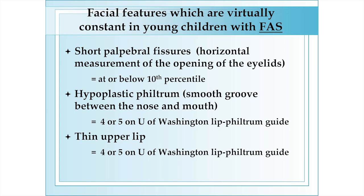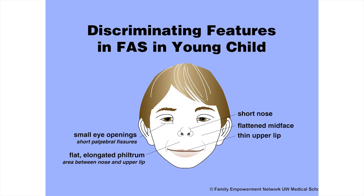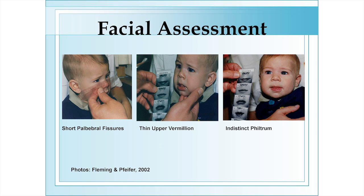The cardinal facial features of fetal alcohol syndrome include short palpebral fissures, which according to the CDC criteria are defined as at or below the tenth percentile, a smooth philtrum, and a thin upper lip, both of which use the University of Washington lip-philtrum guide and a score of four or five as definitions. These pictures demonstrate the use of the University of Washington lip-philtrum guide, as well as a measurement of the palpebral fissures using a transparent ruler.